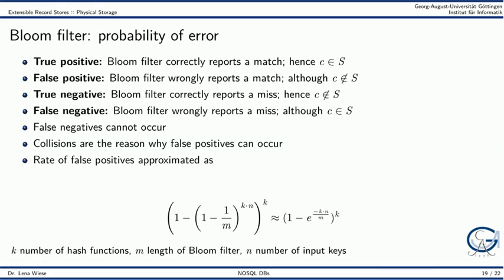The rate of false positives can be approximated by the shown formula that depends on the number of hash functions k, the length of the bloom filter m and the number of input keys n.